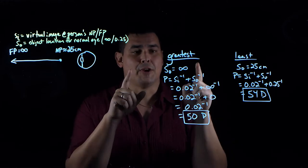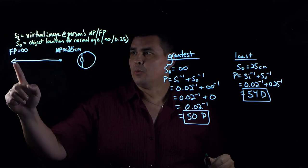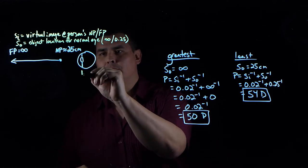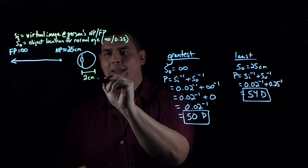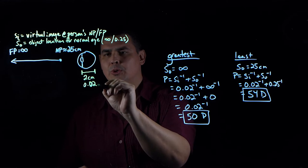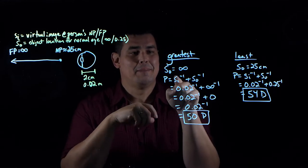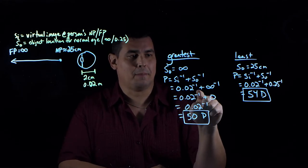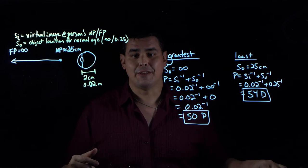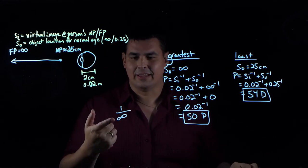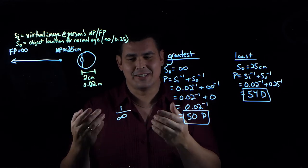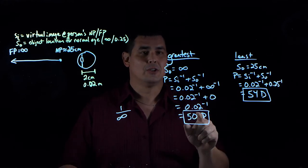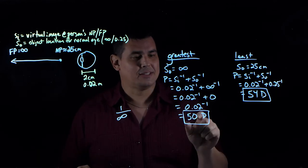For the greatest distance, the object is at infinity. The image distance for a normal eye is the distance from the lens to the retina — 2 centimeters, or 0.02 meters. So power equals 0.02 to the minus one plus infinity to the minus one. The reciprocal of infinity is zero, so it's just the reciprocal of 0.02, which gives 50 diopters. Your fully relaxed eye looking at the farthest thing has a power of 50 diopters.